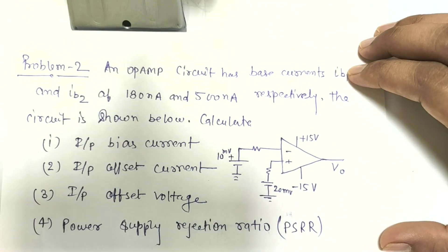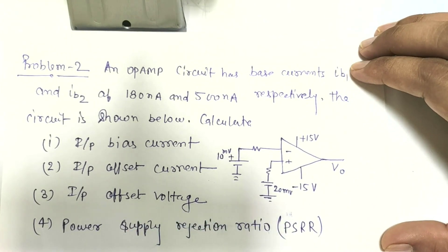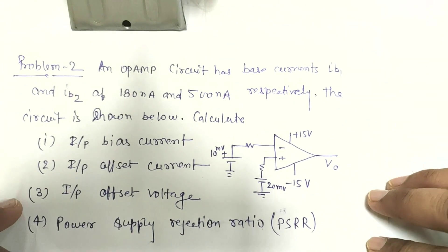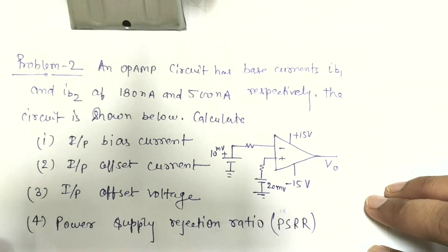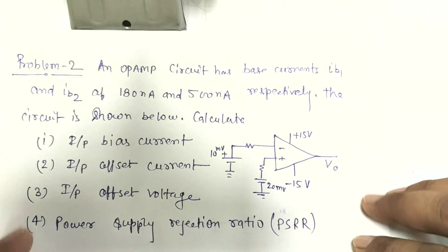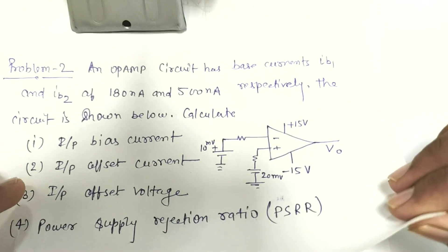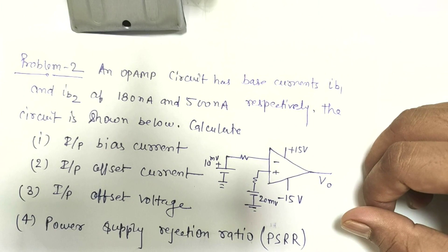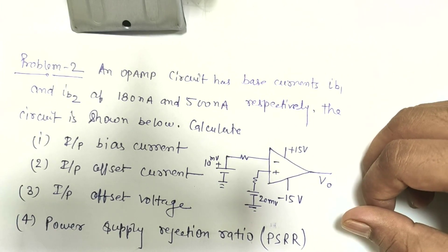This is the circuit diagram for the problem. Watch the video, make a solution, then you can continue for the solution. Let me first look at the input bias current.